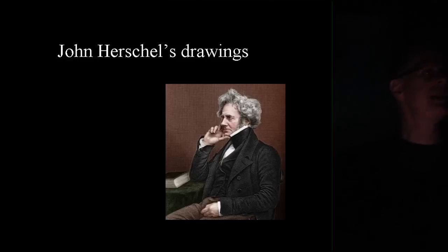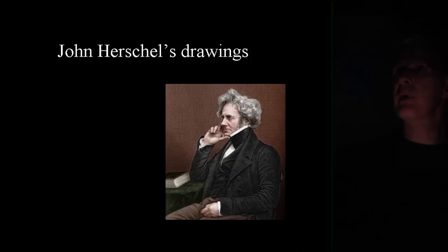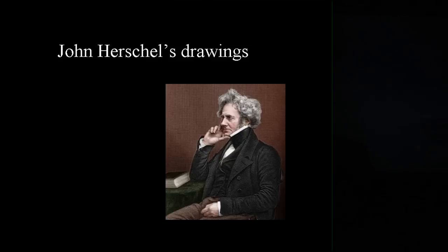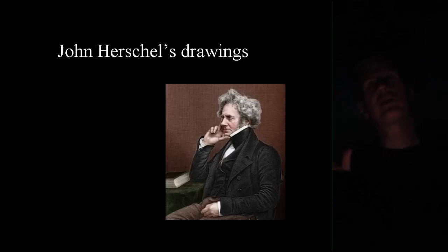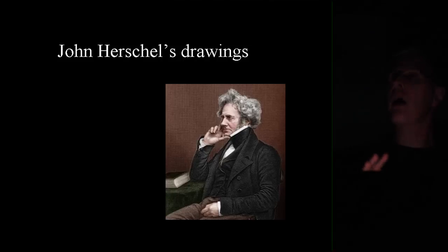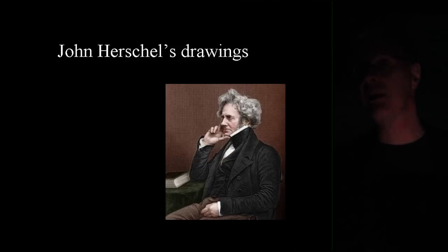Most people know William Herschel — the discoverer of Uranus, who built the first large practical reflecting telescopes and discovered thousands of deep sky objects. We're going to talk about his somewhat lesser renowned son, John, because John was a drawer — an artist at the eyepiece, as well as a widely renowned scientist of his time.